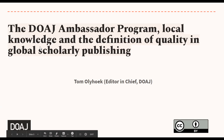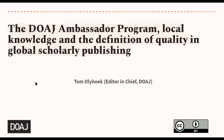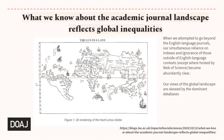Let me start again. I will talk about the DOAJ Ambassador Program, local knowledge, and the definition of quality in global scholarly publishing, as part of the whole publishing landscape and what's going on in open access and open science. Let me start with this picture — it's a picture of a globe, apparently one of the oldest globe pictures. On the right side you see 'Land of the Dragons,' which was referred to as perhaps the predatory journals that are outside Europe and the US. There is a very skewed view that we have of publishing and of knowledge in general.